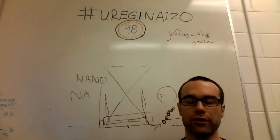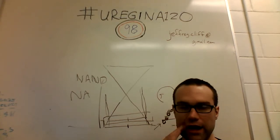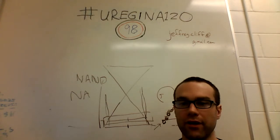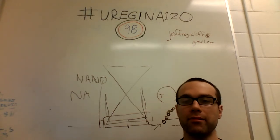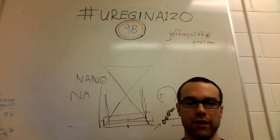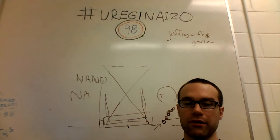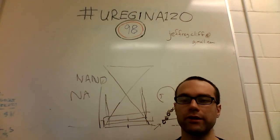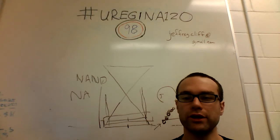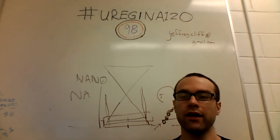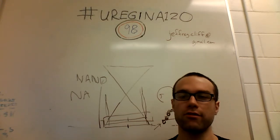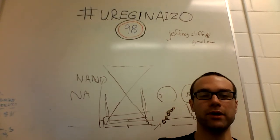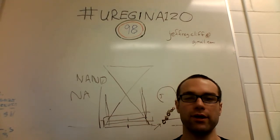Democritus viewed atoms as neither created nor destroyed. This isn't actually true — atoms do get created and destroyed — but it was an early attempt at placing cosmological invariants somewhere, and at the time it wasn't a bad guess. Most of the time atoms aren't created and destroyed. Aristotle didn't like this idea because it didn't explain where atoms came from, leaving an open question about this invariant universe that seems to be configuring itself all the time.